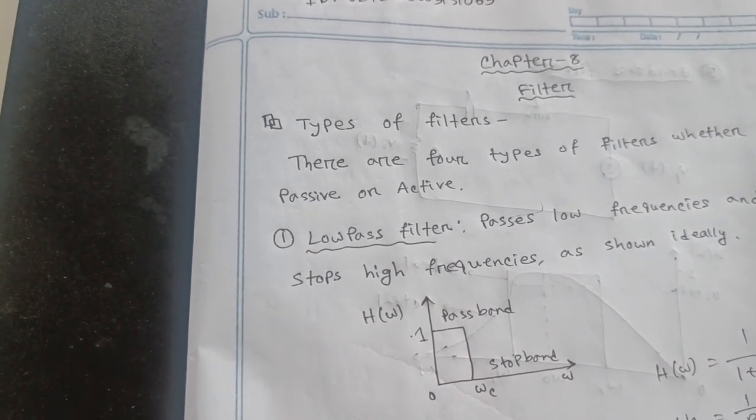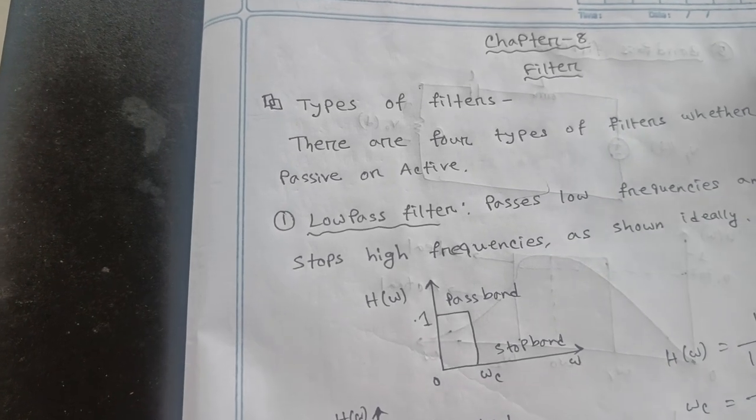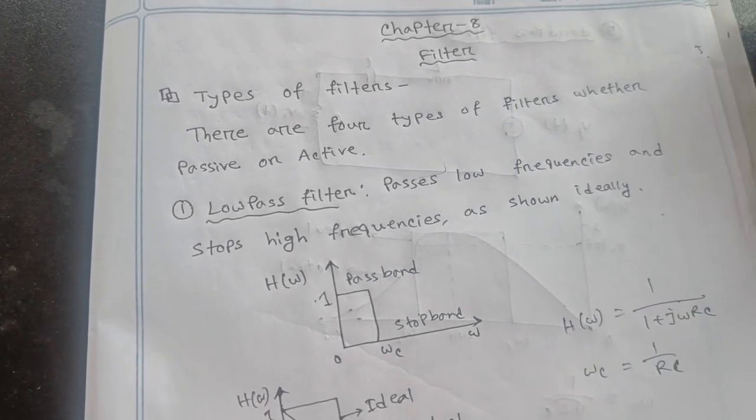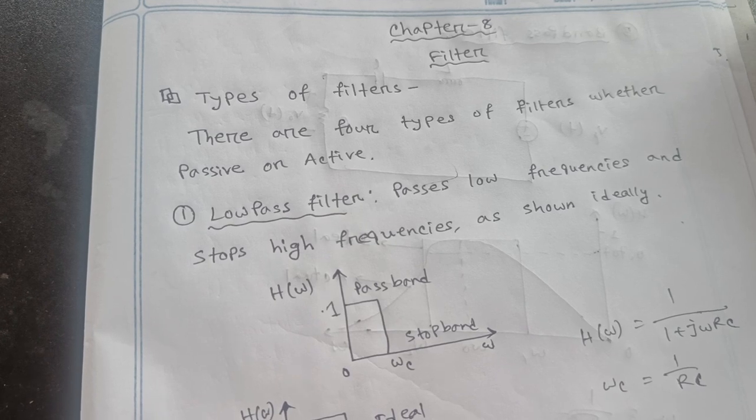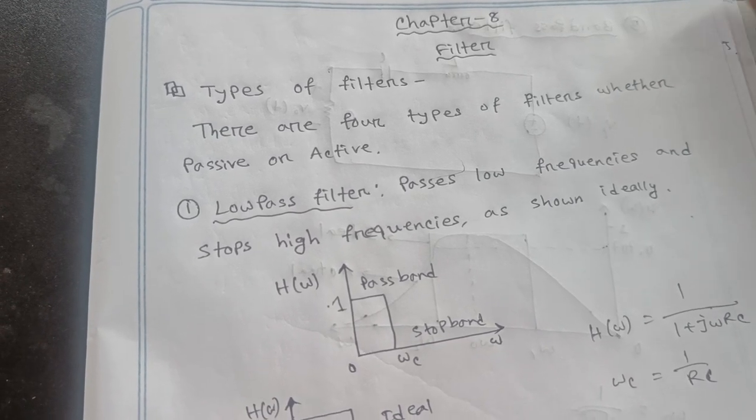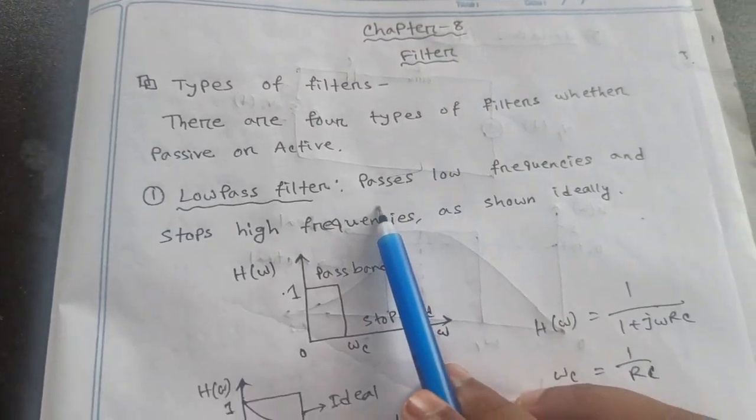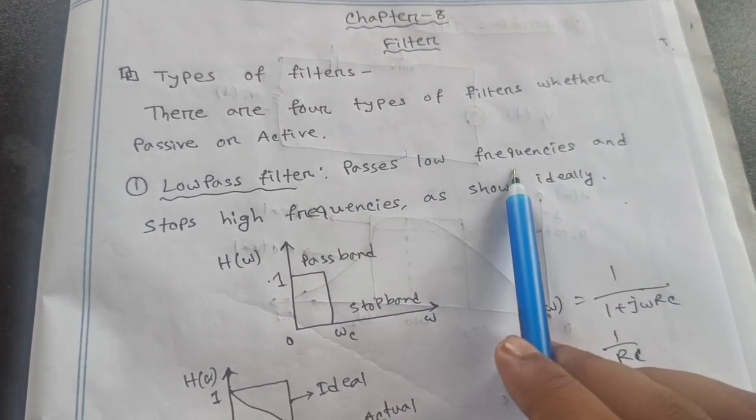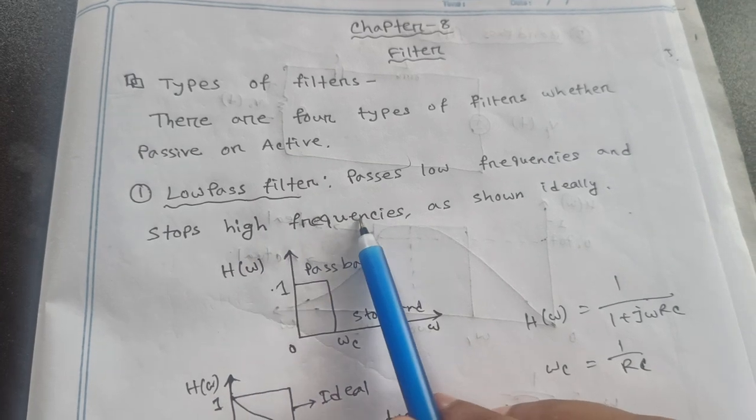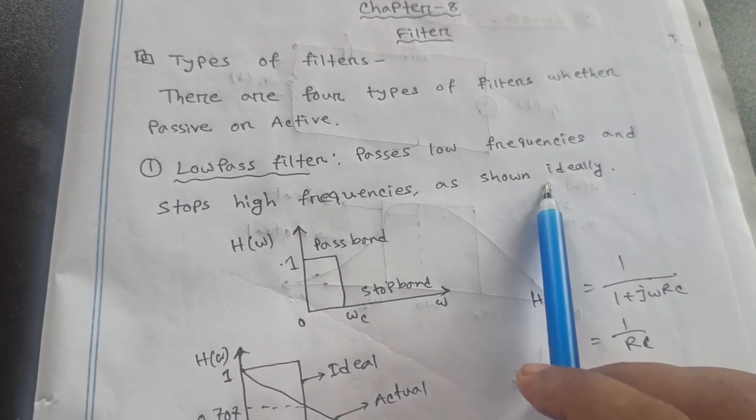The filter is types of filter. There are four types of filter, whether passive or active. Number one, low pass filter passes low frequency and stops high frequency, as shown ideally.